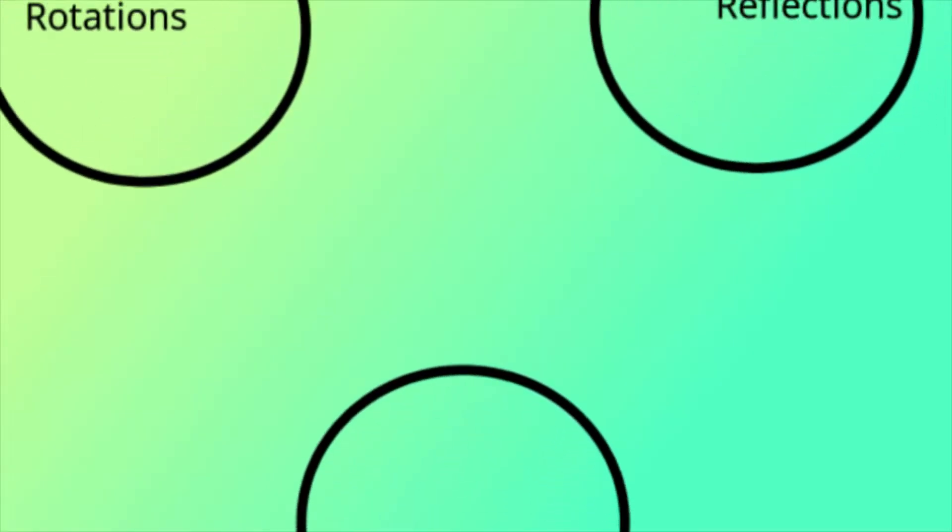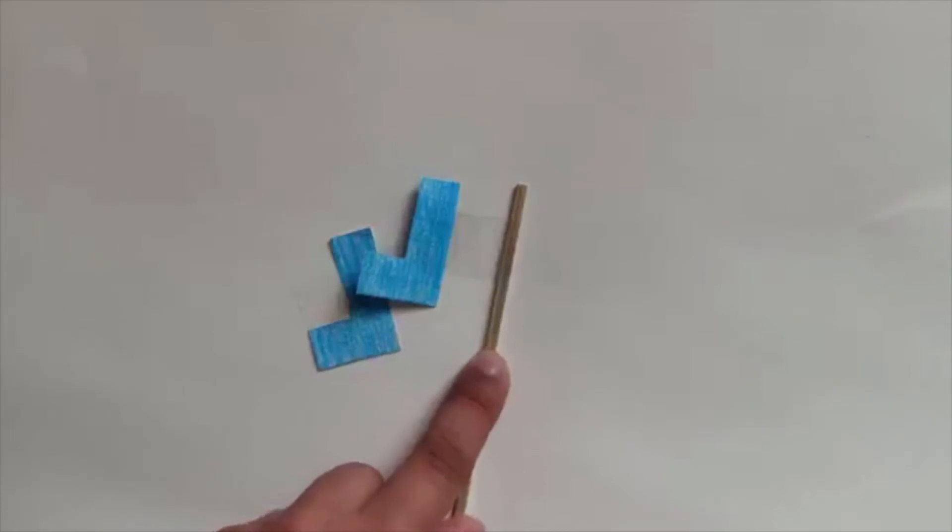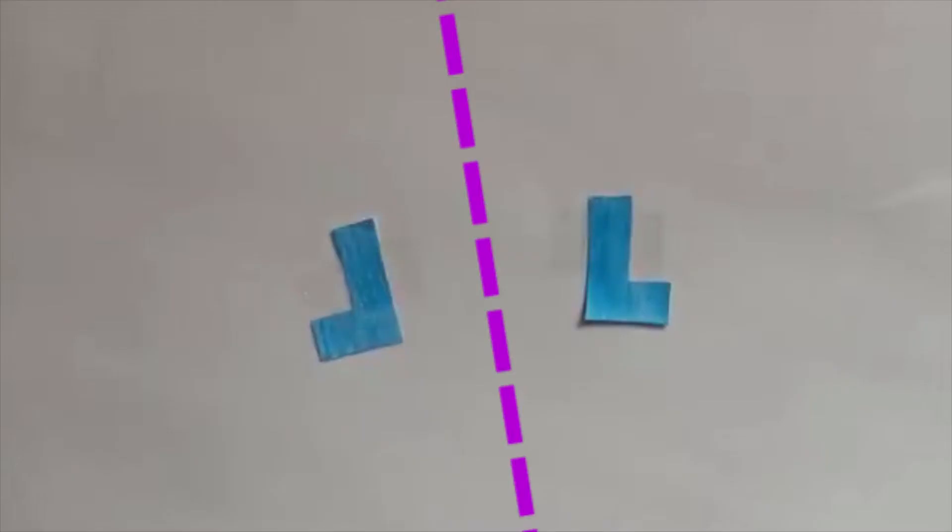What happens if you combine two of these? Combining a translation and a reflection results in a glide reflection. A rotation and a reflection just gives a reflection, just over a different line.